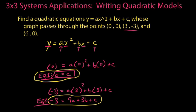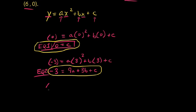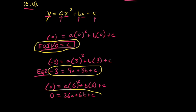For our third equation, plugging in the point (6, 0): 0 = a(6)² + b(6) + c. Simplifying, we get 0 = 36a + 6b + c. This is equation 3.